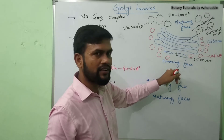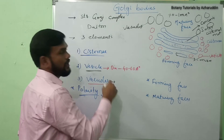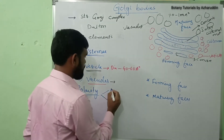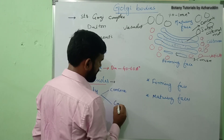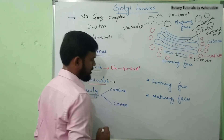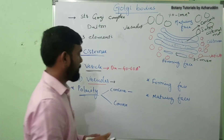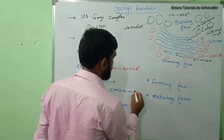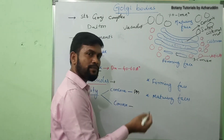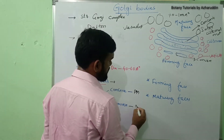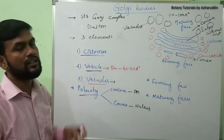The Golgi complex shows polarity. It has a concave side and a convex side. The convex side is always present towards the plasma membrane, and the concave side is always present towards the nucleus.